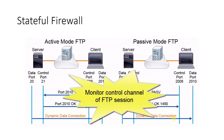With stateful firewalls, you can monitor the control channel of FTP sessions. State tables are populated by the firewall as connections are being made. The firewall checks items such as SYN flags, sequence numbers, and port numbers in order to know what to expect in the return path of the three-way handshake. This works for both active and passive FTP sessions.